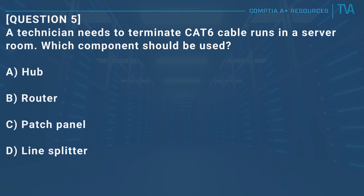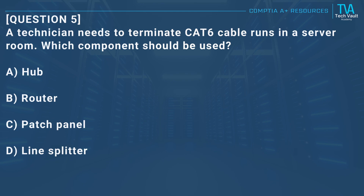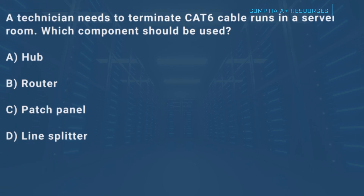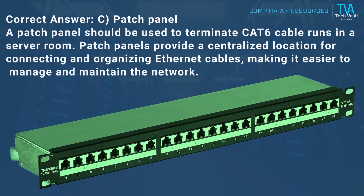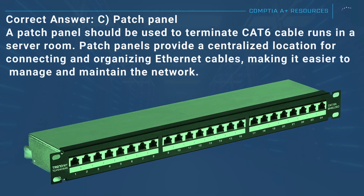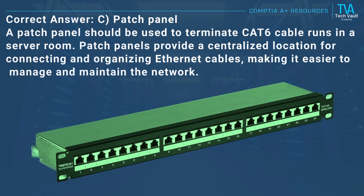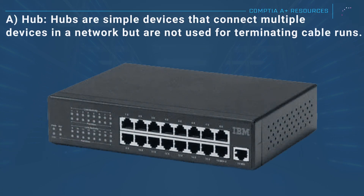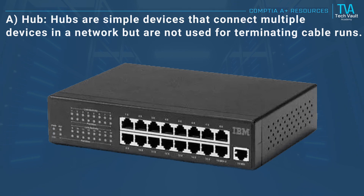Question 5: A technician needs to terminate CAT6 cable runs in a server room. Which component should be used? A, hub. B, router. C, patch panel. D, line splitter. Correct answer: C, patch panel. A patch panel should be used to terminate CAT6 cable runs in the server room. Patch panels provide a centralized location for connecting and organizing Ethernet cables, making it easier to manage and maintain the network. A, hub: hubs are simple devices that connect multiple devices in a network but are not used for terminating cable runs.